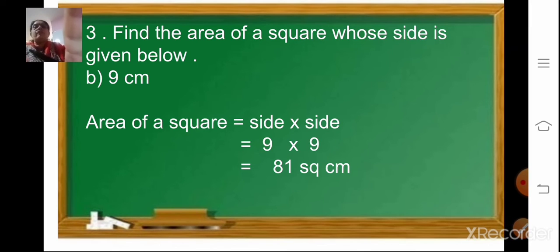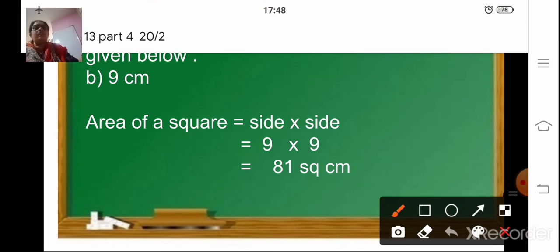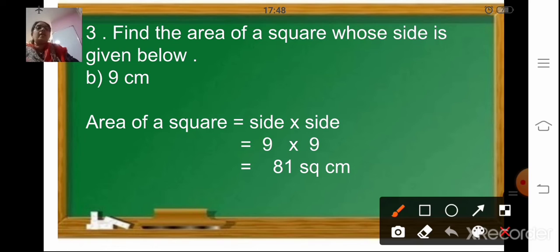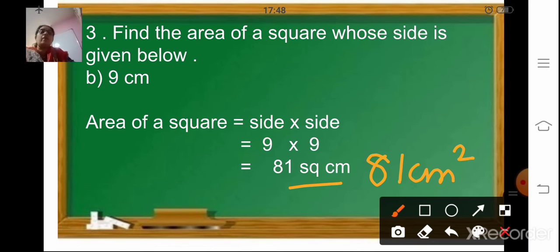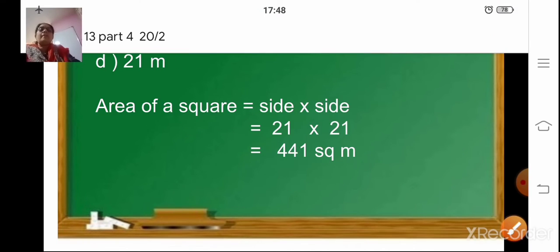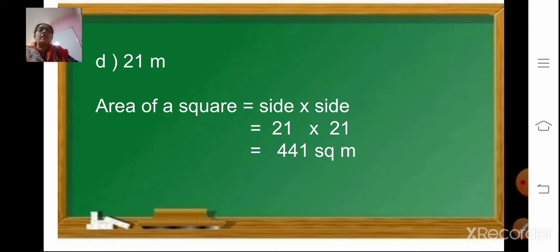Coming to finding the area of a square whose side is given. The formula is side into side. Area of square is side multiplied by side — that is 9 into 9, so 9 nines are 81 square centimeter. For the next sum where the side of a square is 21 meter: area of a square is side into side, so 21 multiplied by 21 is 441 square meter.